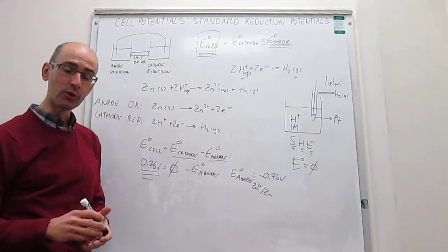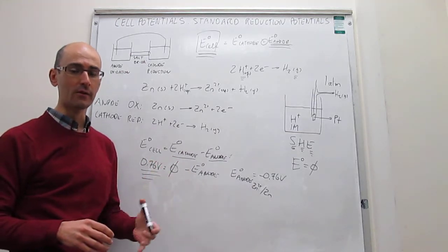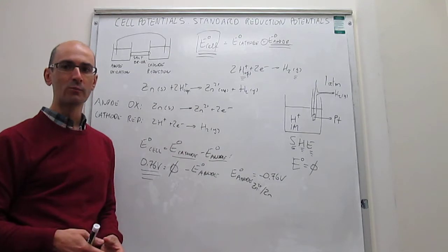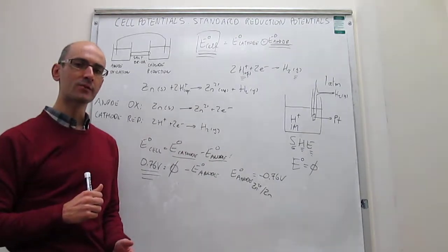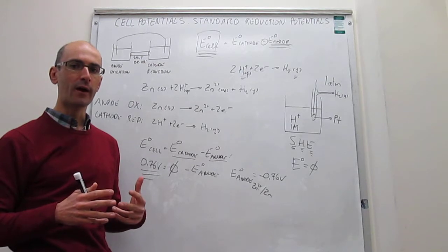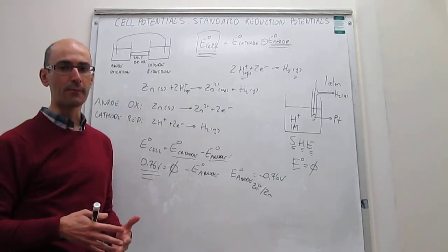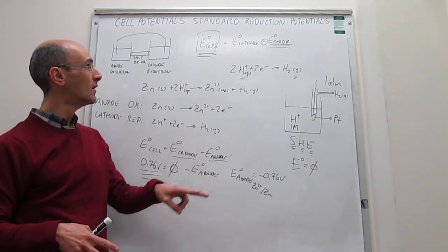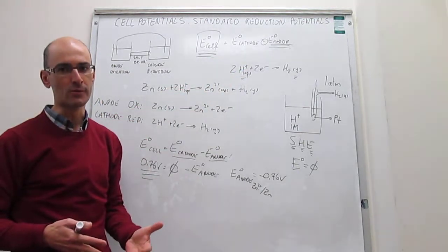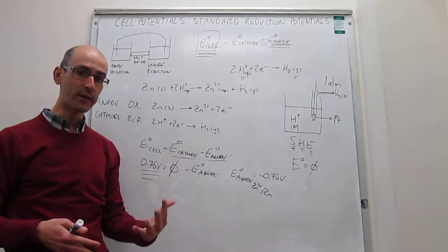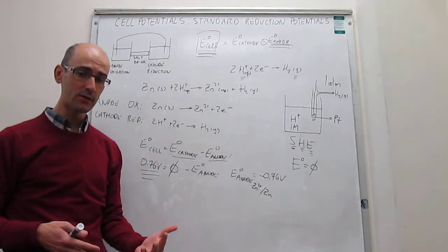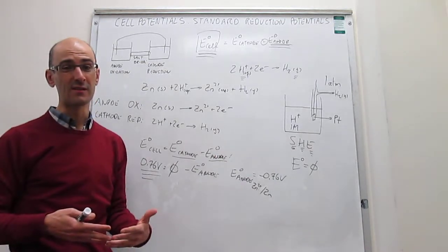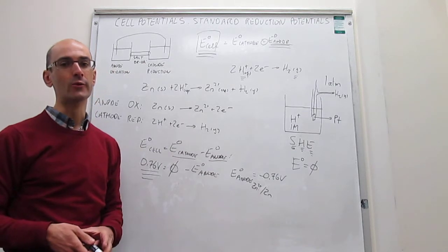In the next video we'll examine an example to clarify how to use this expression with standard reduction potentials. To summarize: we've established a table of standard reduction potentials referenced to the SHE. Using E_cell = E_cathode − E_anode, you can determine whether a reaction is spontaneous and whether you can extract work from it, or whether work must be applied.